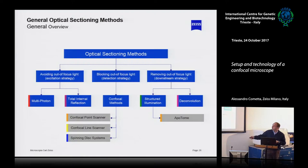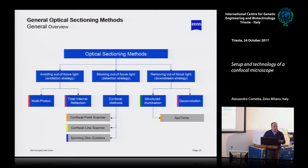Coming to confocal methods, we can have a point scanner, line scanner, and spinning disk. This is a way to improve and speed up the system, because the confocal is, by design, a very slow system.